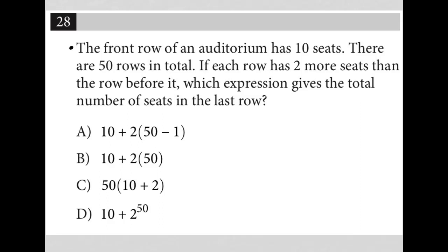This question says the front row of an auditorium has 10 seats. There are 50 rows in total. If each row has two more seats than the row before it, which expression gives the total number of seats in the last row?